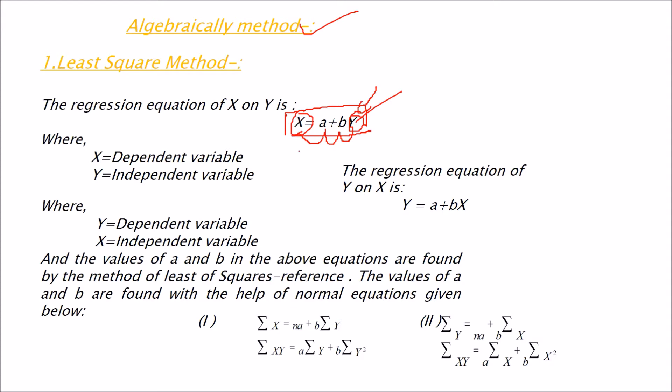But if you say I want to find out how Y varies when X values are given, for that you have the regression equation of Y on X. So here the dependent variable becomes Y and the independent variable becomes X. So we will use certain expressions because we also need to know the A and B.